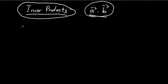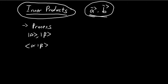The best way to understand an inner product is to understand it as a process — a process by which we assign a value to two vectors. So let's say I have a vector alpha and a vector beta. The inner product will work its magic and assign a value to these two vectors. We use a specific notation to represent an inner product. We can define this process of starting with two vectors and assigning a value however we want, and this whole process is called an inner product.